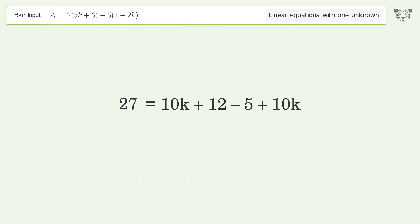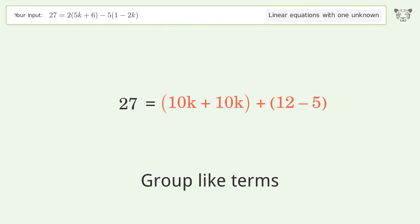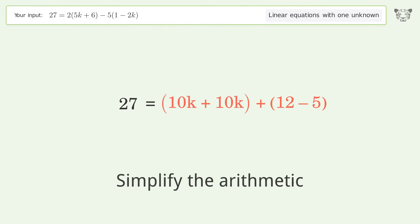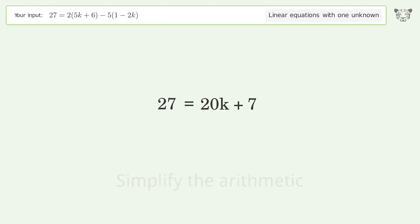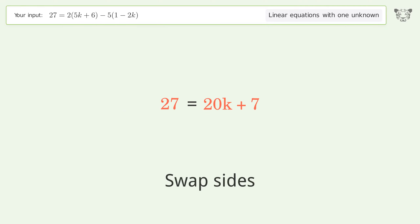Group like terms and simplify the arithmetic, then swap sides.